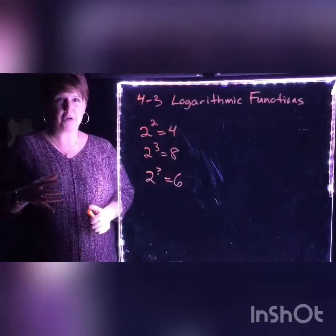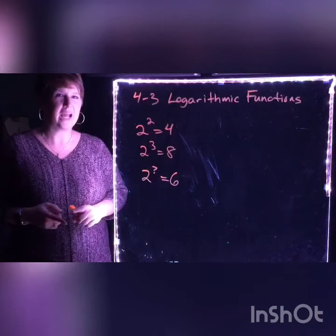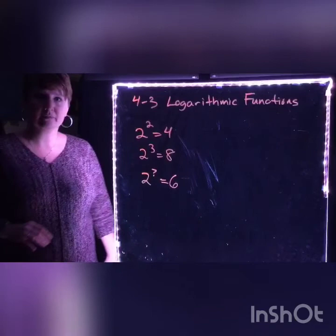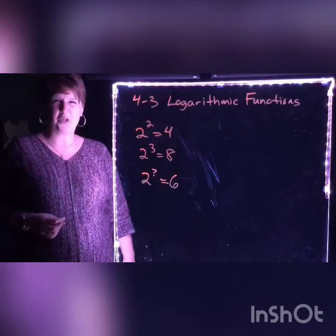Turn to the people around you and tell me what number you're thinking might be the exponent that we would put on a two to turn it into a six. How many of you guessed 2.5? It's logical. Six is halfway between four and eight; two-point-five is halfway between two and three. Pick up your calculator, type it in. Two to the — use the caret — two-point-five power. Do we get six?